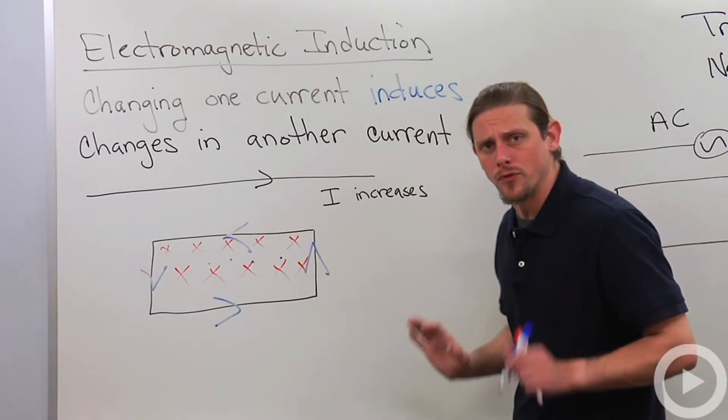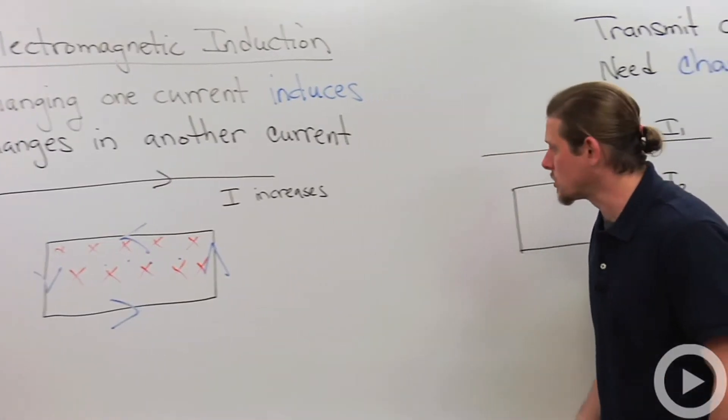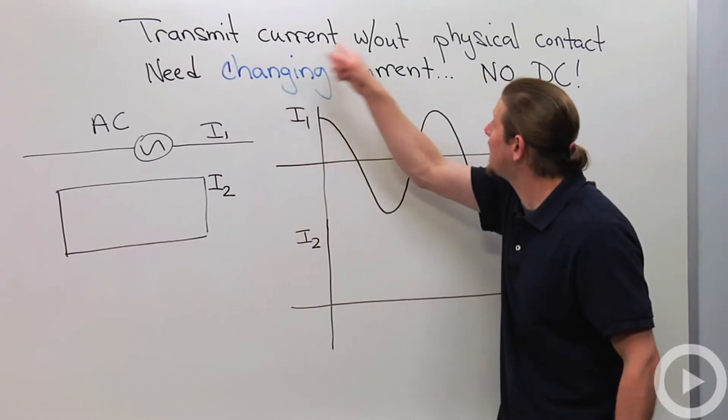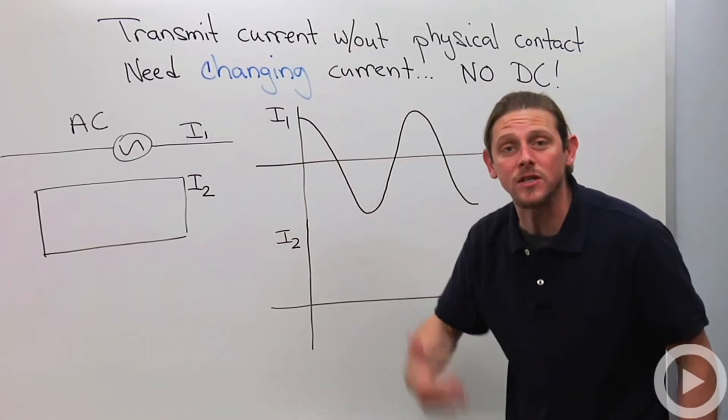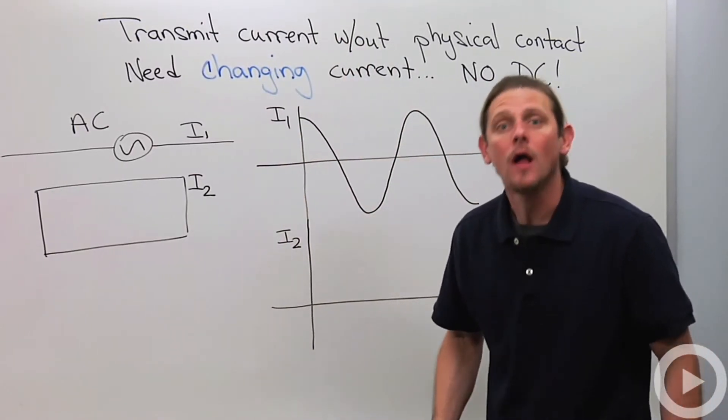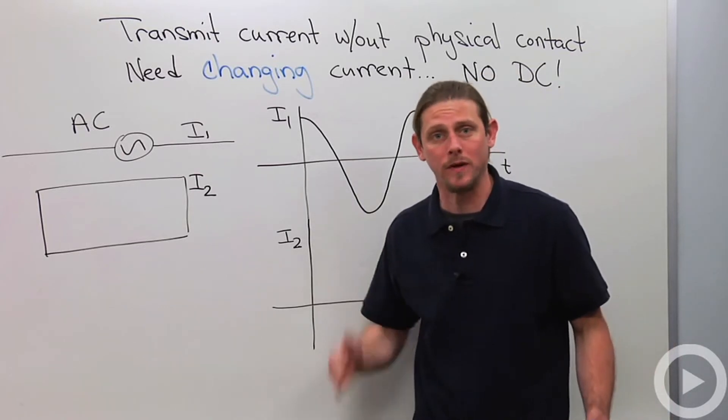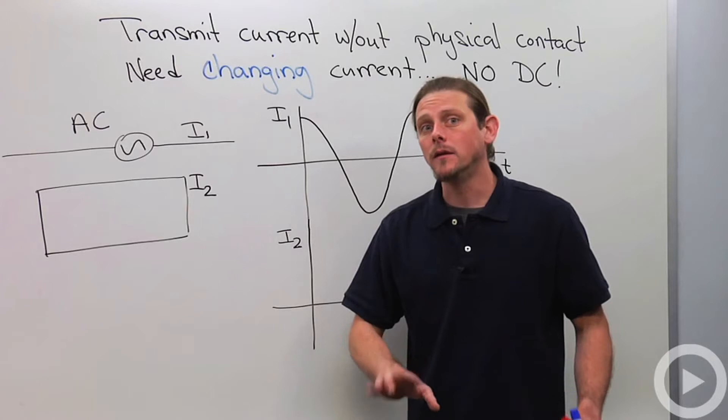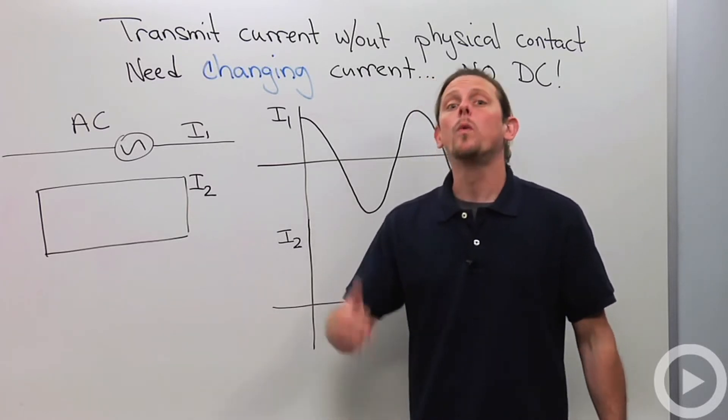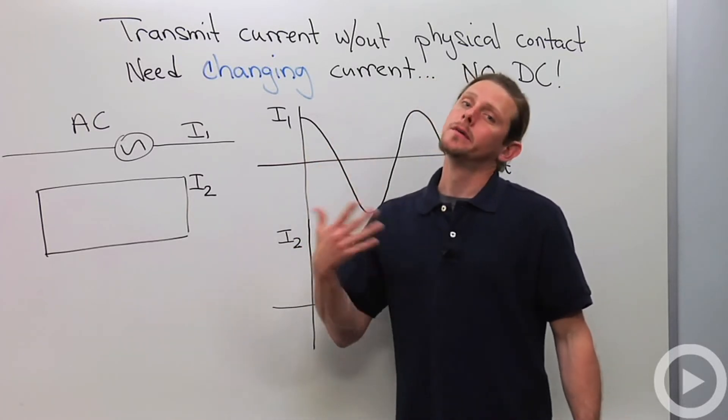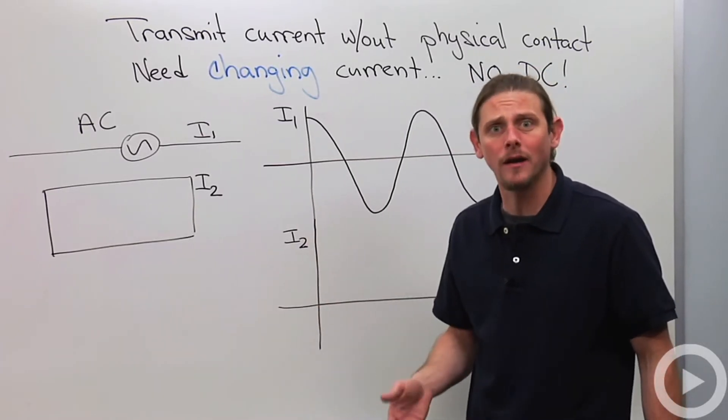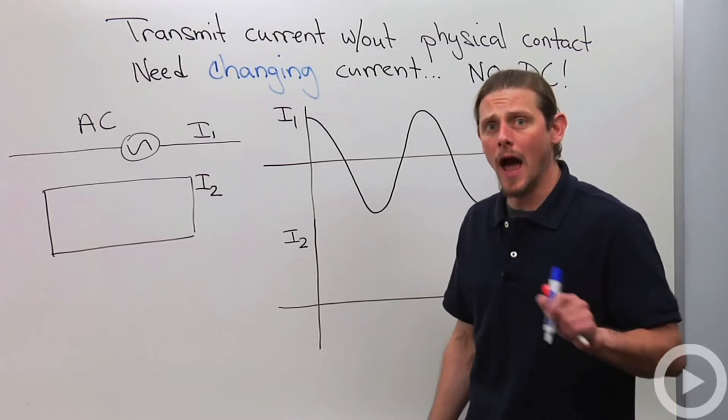The beautiful thing about this property of electromagnetic induction is that it allows us to transmit current with no physical contact at all. There was no physical contact between the top wire and the bottom current loop. But despite that fact, we use the magnetic field in compliance with the Faraday-Lenz law to transmit current down into the other loop.